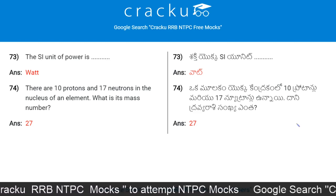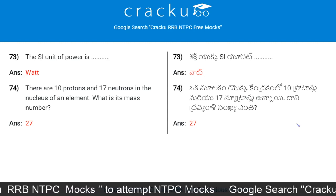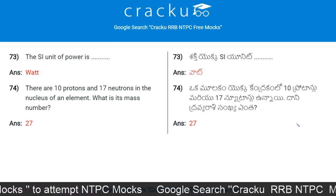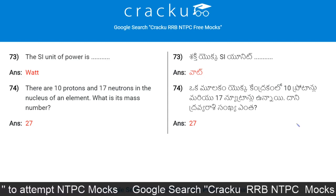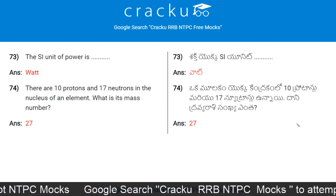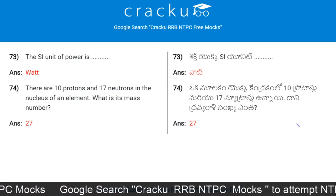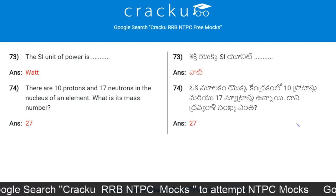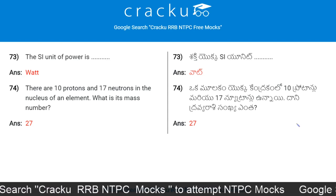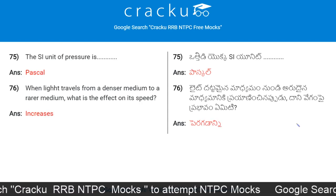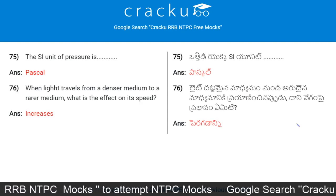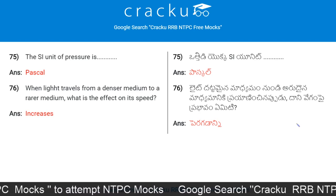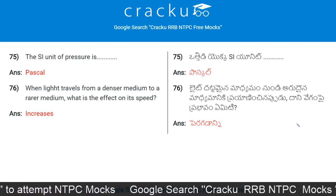There are 10 protons and 17 neutrons in the nucleus of an element; its mass number is 27. The SI unit of pressure is Pascal.